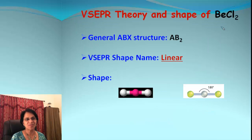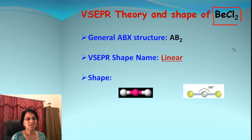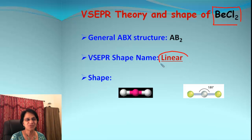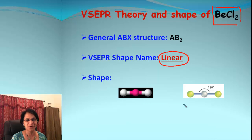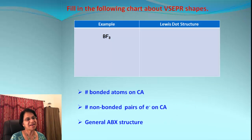To summarize: the molecule is beryllium chloride, the general ABX structure is AB2, and using the table we get the VSEPR shape as linear. The 3D structure looks like a straight line.